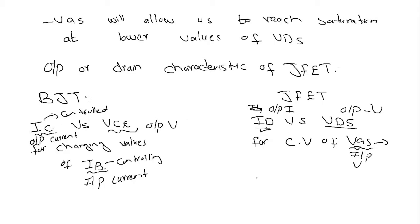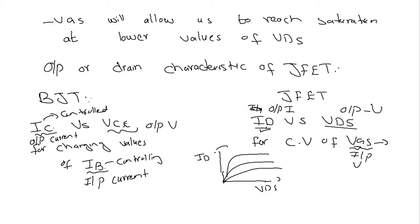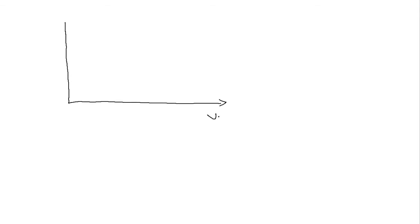So the output characteristic graph of the junction field effect transistor will be between ID versus VDS for the changing values of VGS. On the X axis I am going to have the output voltage which is VDS, and on the Y axis I am going to have the output current which is ID, the drain current.